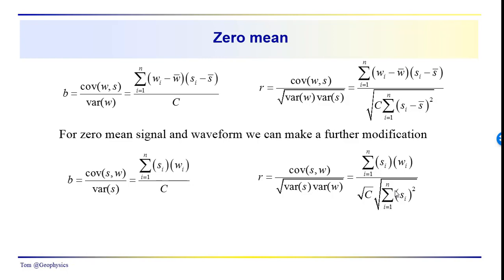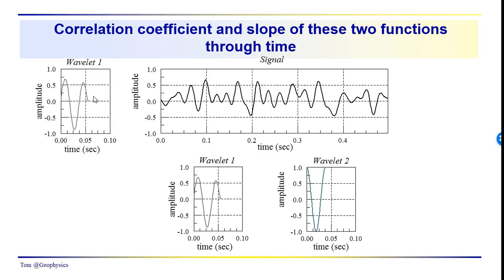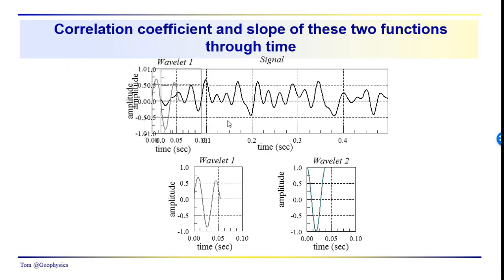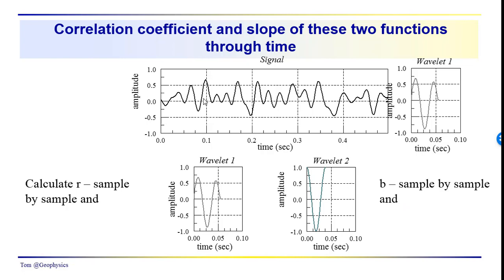As a reminder, we're doing a comparison of slope B and correlation coefficient R for waveforms one and two. We've got the two wavelets, and what we're doing is taking each wavelet, moving it through the signal, and calculating the slope, intercept, and correlation coefficient sample by sample along the length of the signal.